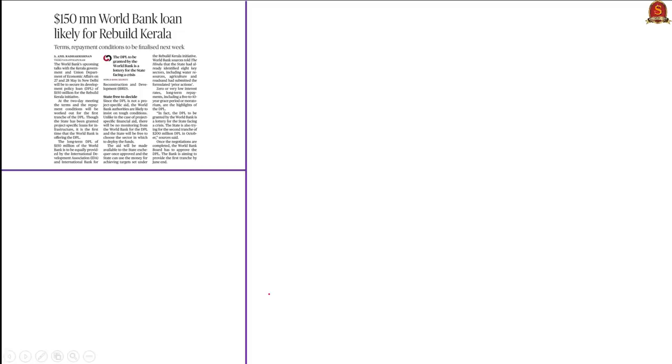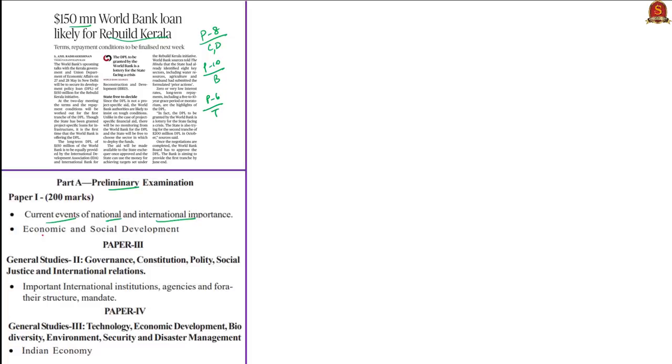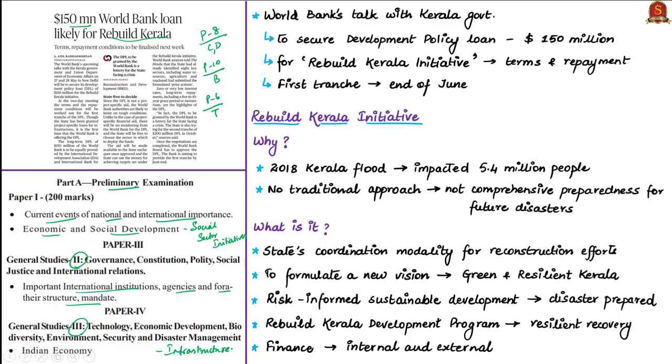Moving on to the fourth news article, titled '150 Million US Dollar World Bank Loan Likely for Rebuild Kerala.' This article appears on page 8 in Chennai and Delhi editions, page 10 in Bengaluru edition and page 6 in Thiruvananthapuram edition. It is relevant in prelims preparation under current events and economic and social development, and in mains General Studies Paper 2 under important international institutions, and Paper 3 under infrastructure. This article is about the World Bank's upcoming talks with the Kerala government and union department of economic affairs to secure a development policy loan of 150 million US dollars for the Rebuild Kerala initiative.